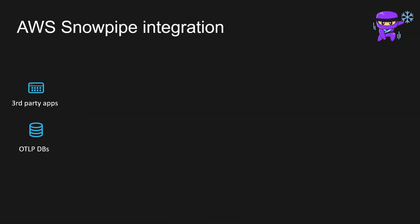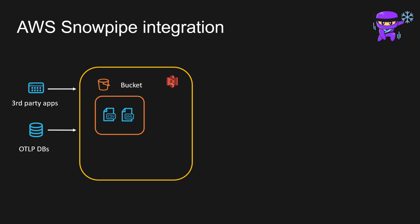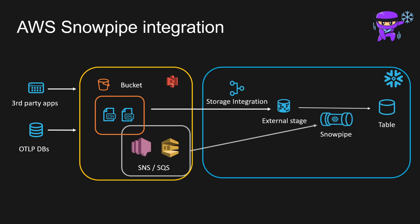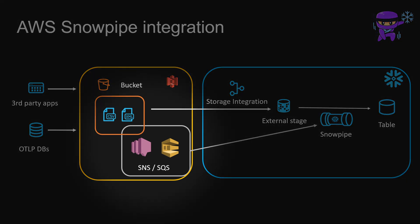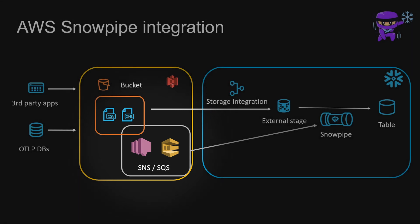In contrast to batch processing, which operates on a predetermined schedule, continuous loading processes data triggered by specific events — typically the arrival of a new file in cloud storage. Snowflake's Snowpipe automates this process by loading new files as soon as they emerge in specified cloud storage destinations. Every time a new file is added, it prompts an event notification, initiating the loading process automatically. Cloud-based messaging services such as AWS SNS or SQS are commonly used to trigger these notifications. Latency is usually around minutes, offering a near real-time solution for data ingestion.